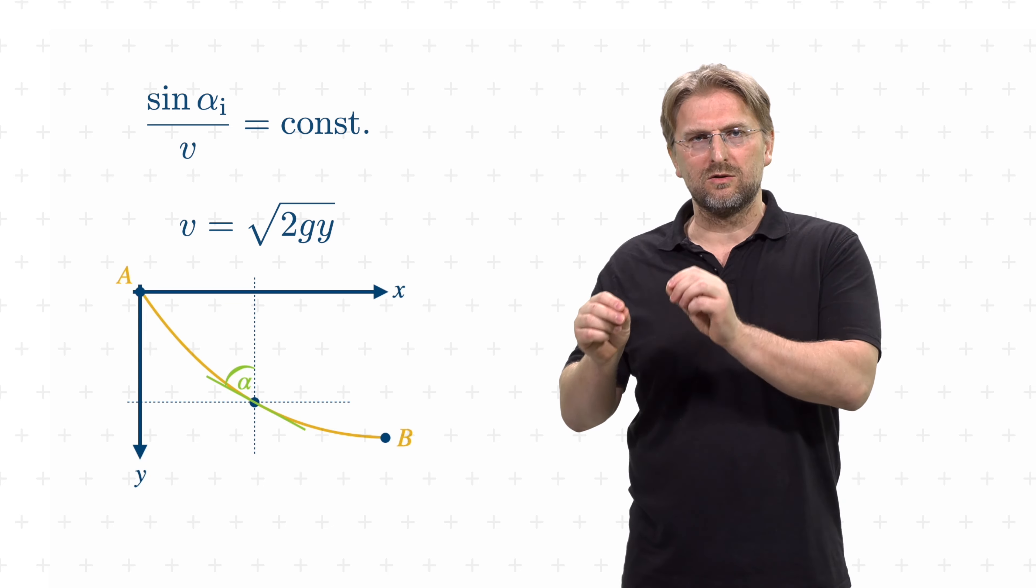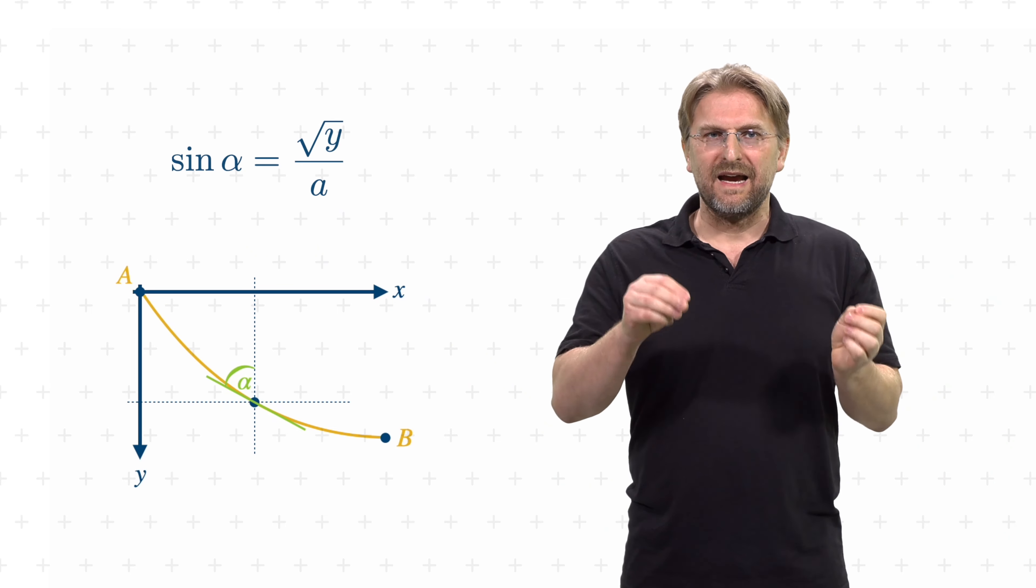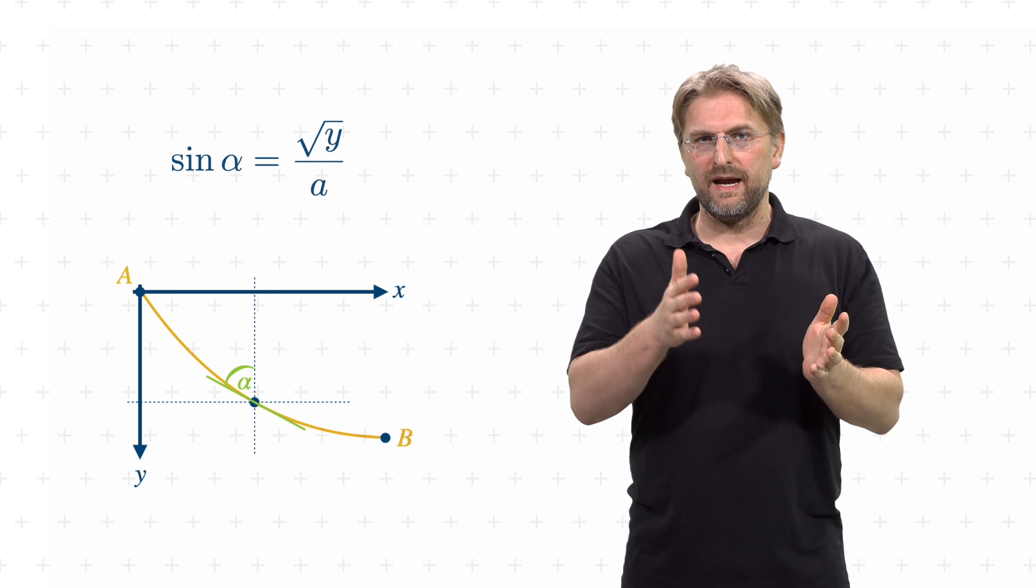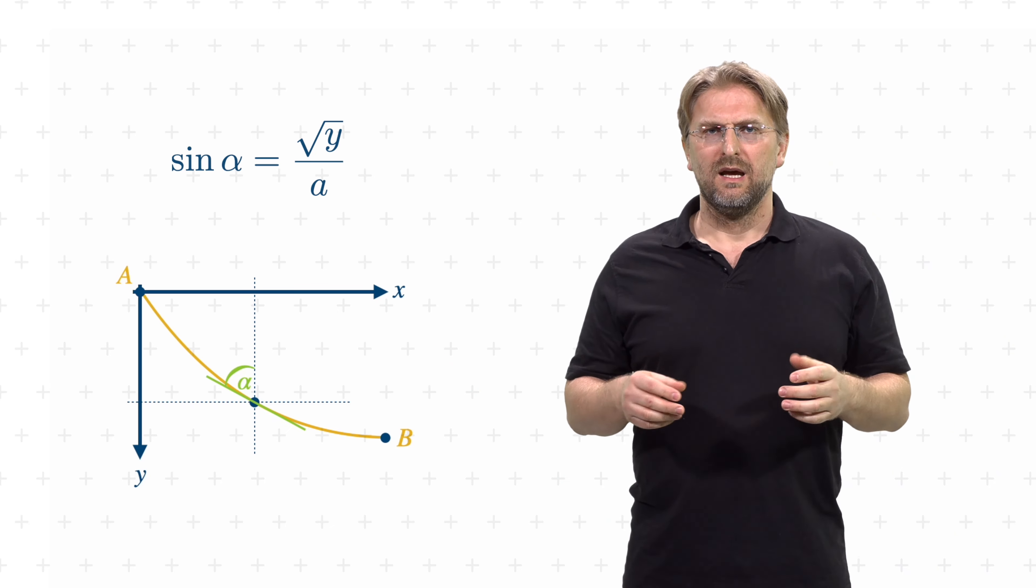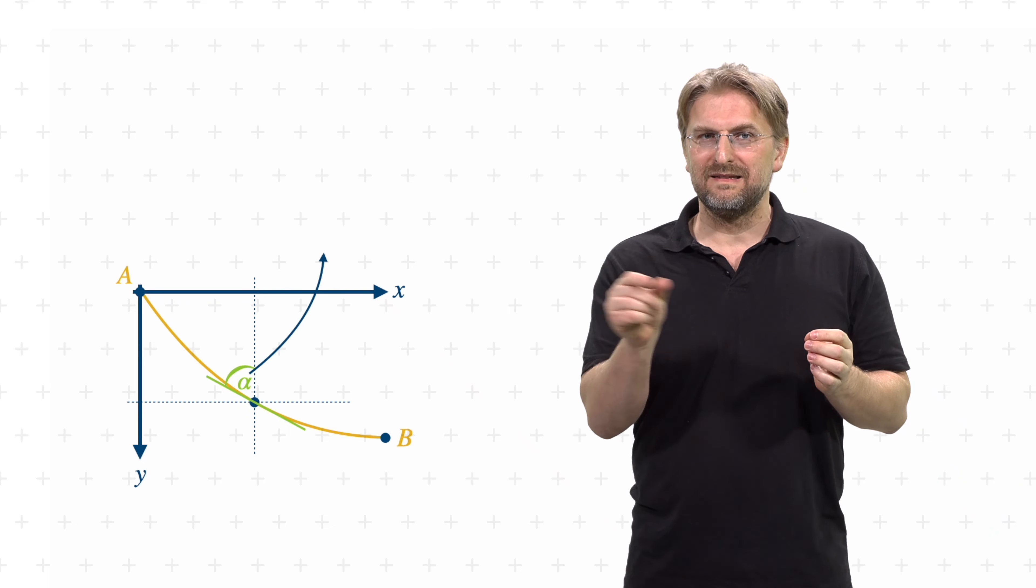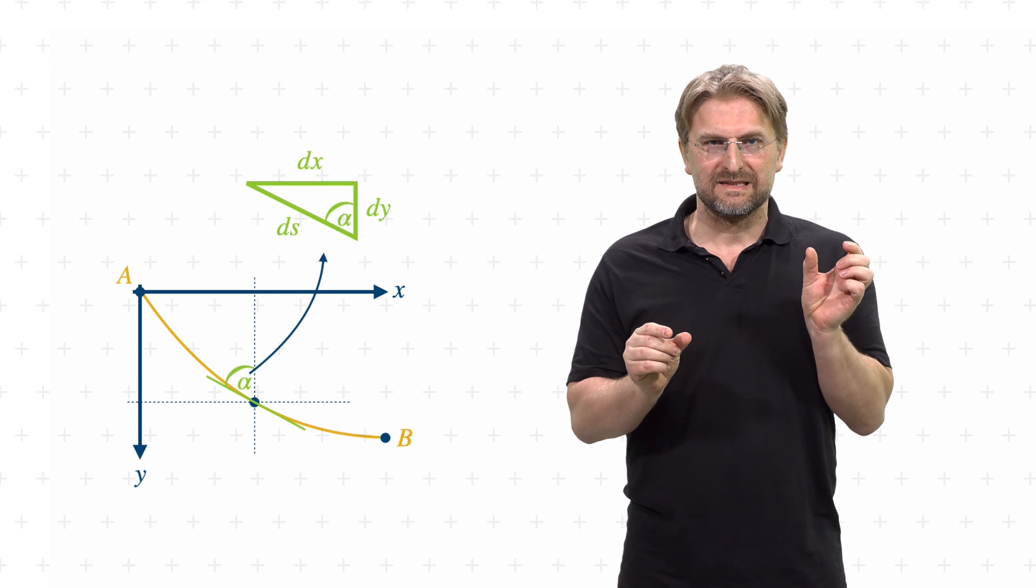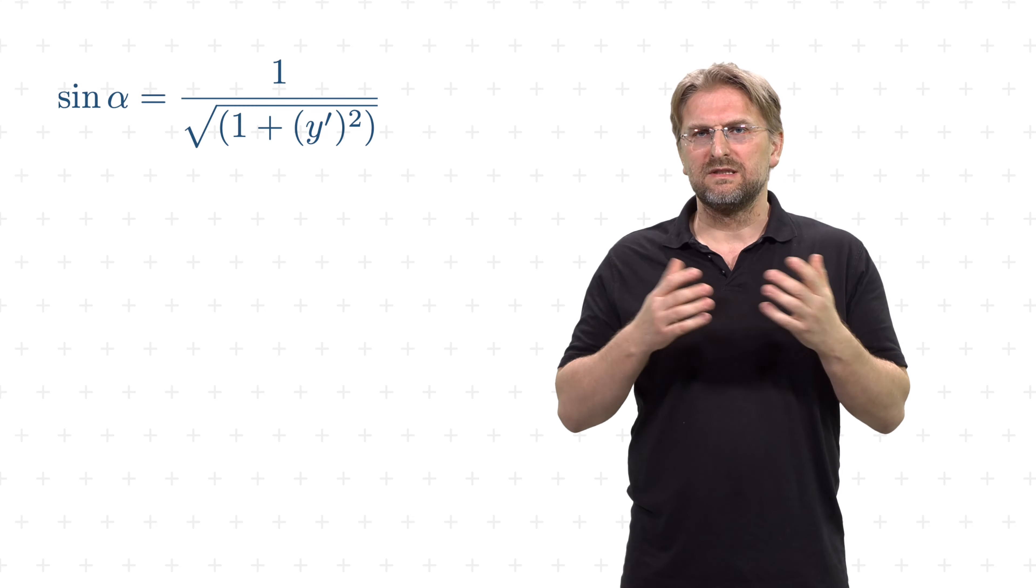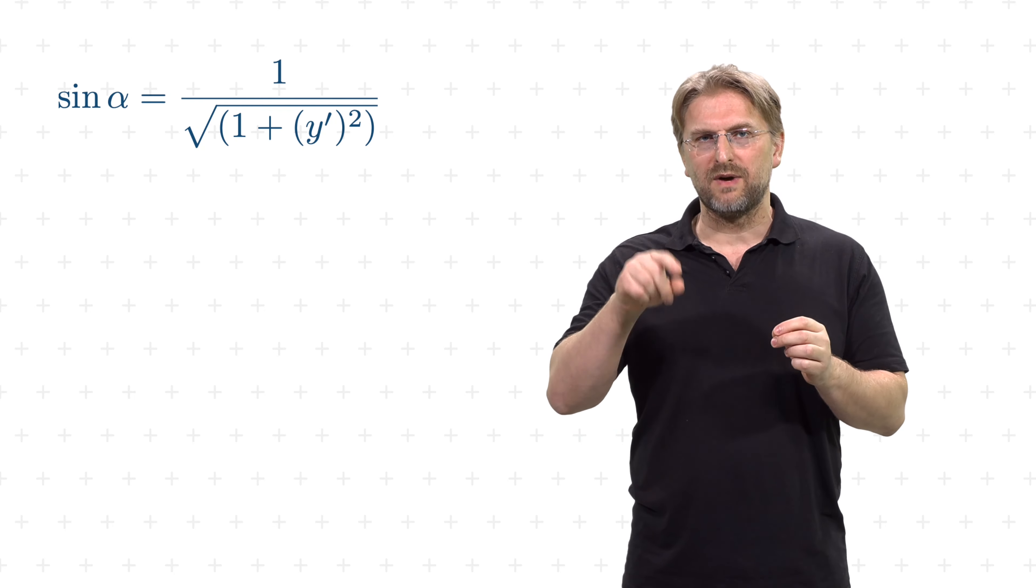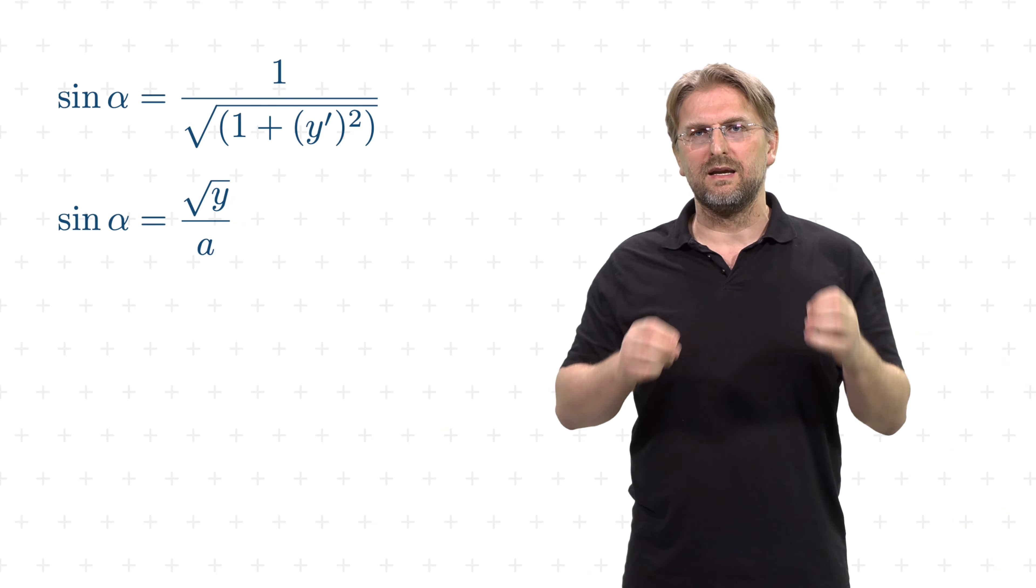So, v is equal to the square root of 2gy, where y is the vertical displacement. And with Snell's law, sin alpha is equal to the square root of y divided by a, where a is a positive constant. The expression for sin alpha we can obtain from an incremental piece ds along the trajectory, which is also the hypotenuse of a small triangle with sides dx and dy. So, sin alpha is equal to 1 divided by the square root of 1 plus y prime squared. So, we have two expressions for sin alpha and putting them together yields our differential equation y prime equal to the square root of a minus y divided by y.